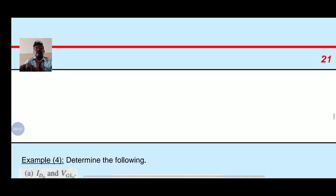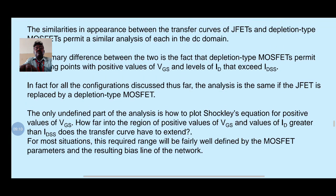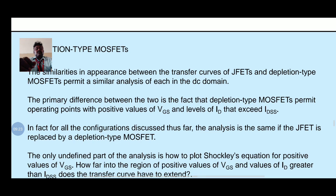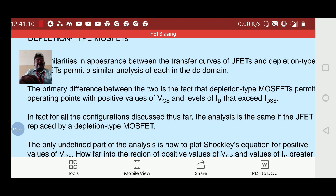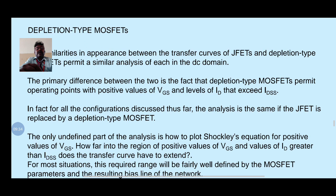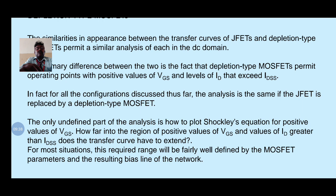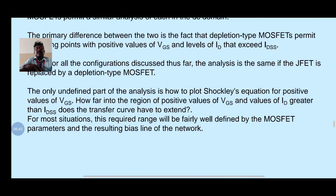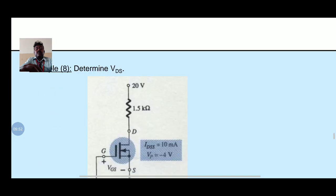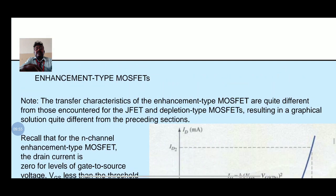We can also find equations for MOSFET biasing. For the depletion type MOSFET, the similarities in appearance between the transfer curve of JFET and the depletion type MOSFET permit a similar analysis in the DC domain. The primary difference is that the depletion type MOSFET permits the operating point with positive values of VGS and levels of ID that exceed IDSS. For all configurations discussed, the analysis is the same if the JFET is replaced by the depletion type MOSFET.